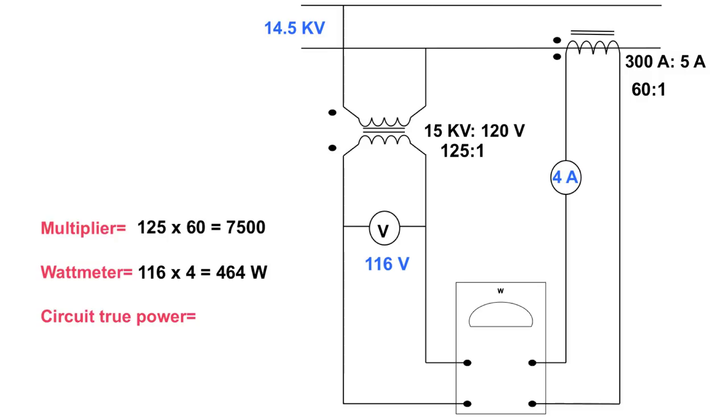But that's not my line true power. Don't be thinking that this number here is the true power up here. That is just what my wattmeter itself is reading, using the PT secondary side and the CT secondary side, that 4 amps there.